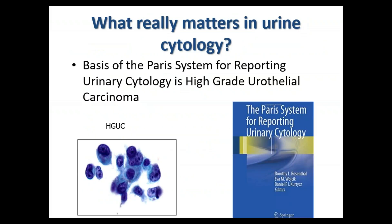The basis of the Paris System is detection of high-grade urothelial carcinoma. Low-grade neoplasms can recur but usually don't invade. However, high-grade urothelial carcinoma or carcinoma in situ may invade and metastasize, with associated higher mortality and morbidity. Therefore, this is the critical feature to detect. Morphologically, high-grade urothelial carcinoma is something we can reliably identify.